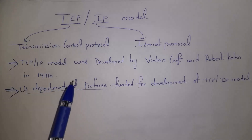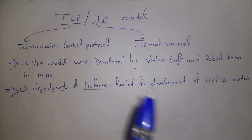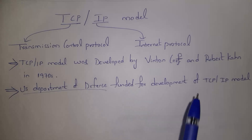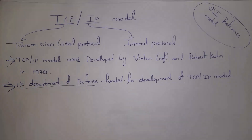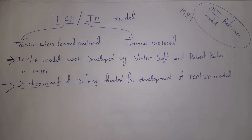The Department of Defense funded the development of the TCP/IP model. If you consider the OSI model, it was developed in the year 1984, whereas the TCP/IP model was developed in the 1970s — so the TCP/IP model was developed before the OSI model.